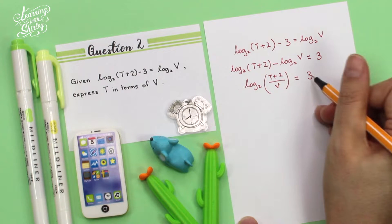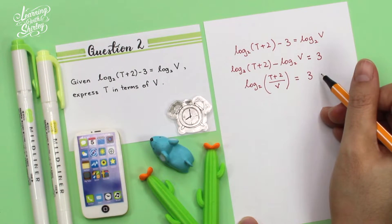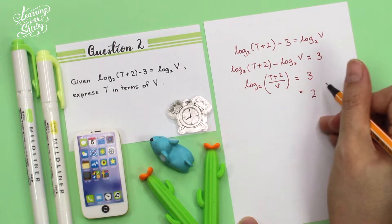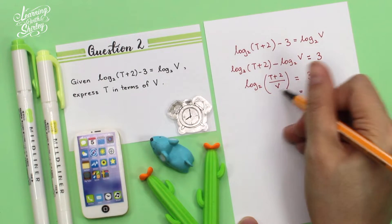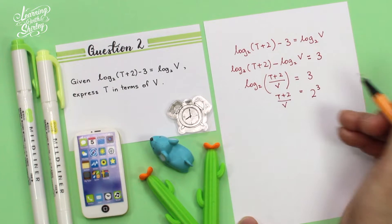So equals 3. So next, I'm going to change this to index form. So this base 2, I'm going to shift it over to the right, it becomes 2 to the power of 3. And this one, I bring it down, becomes (t + 2) / v.